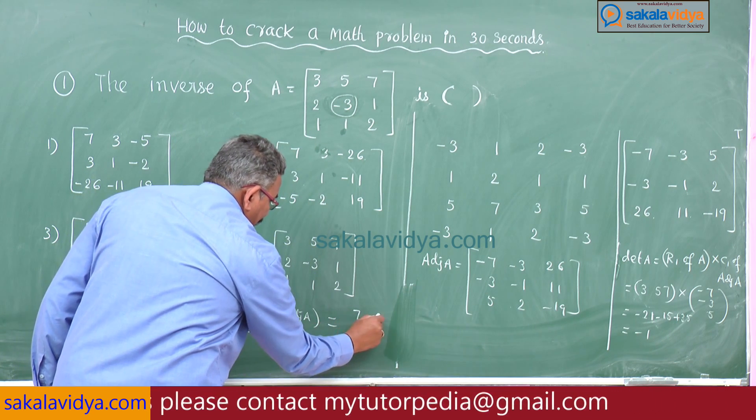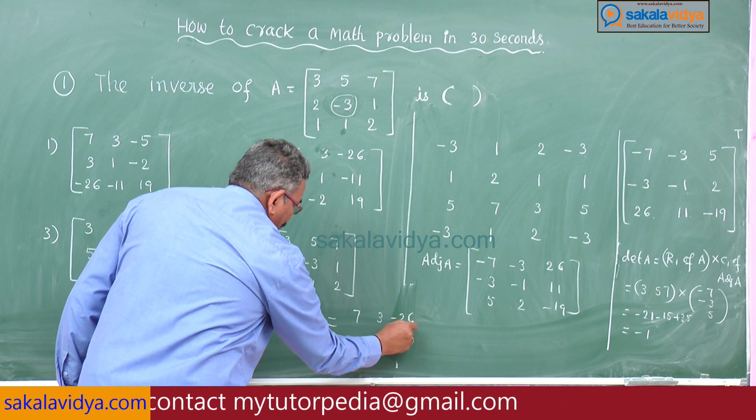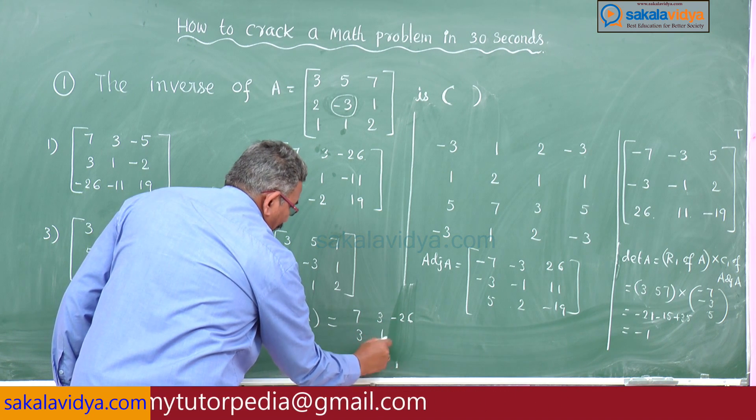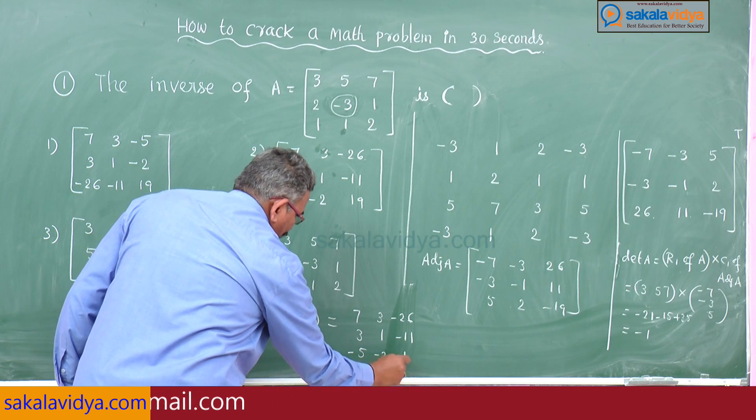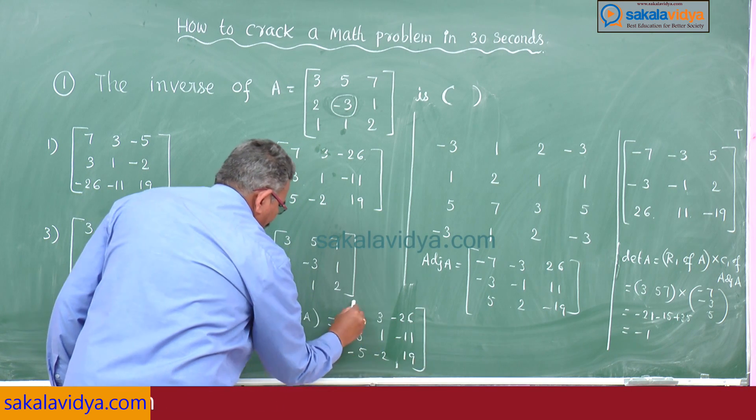If you multiply with -1, what do you get now? [7, 3, -26; 3, 1, -11; -5, -2, 19].